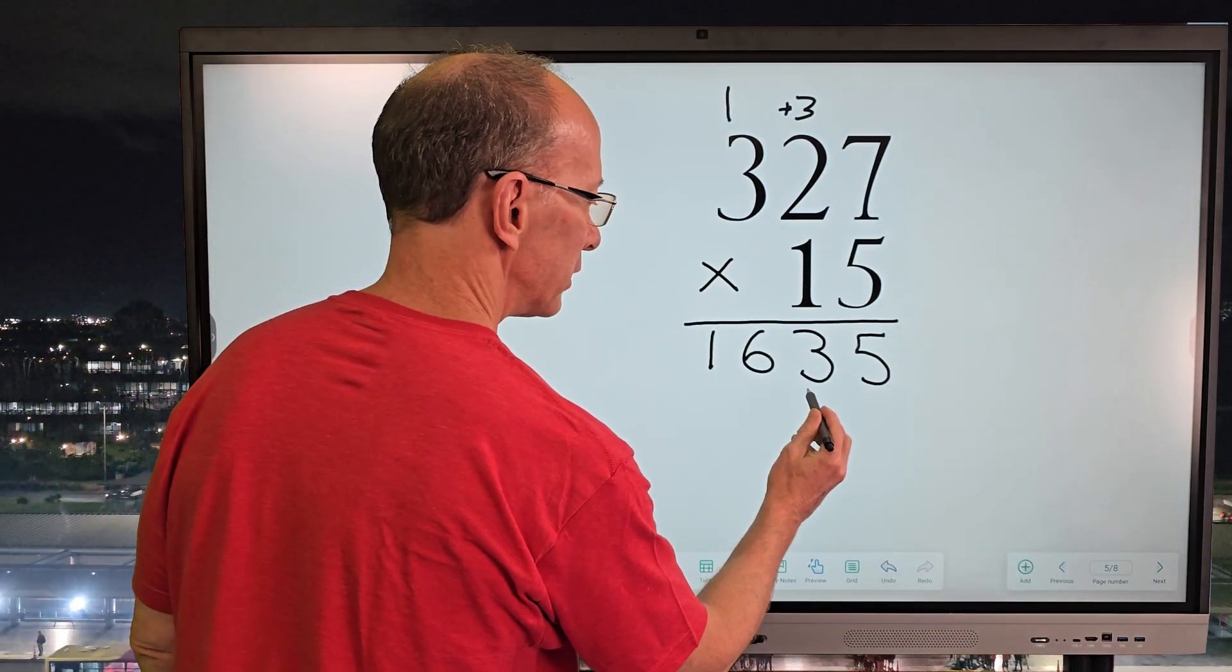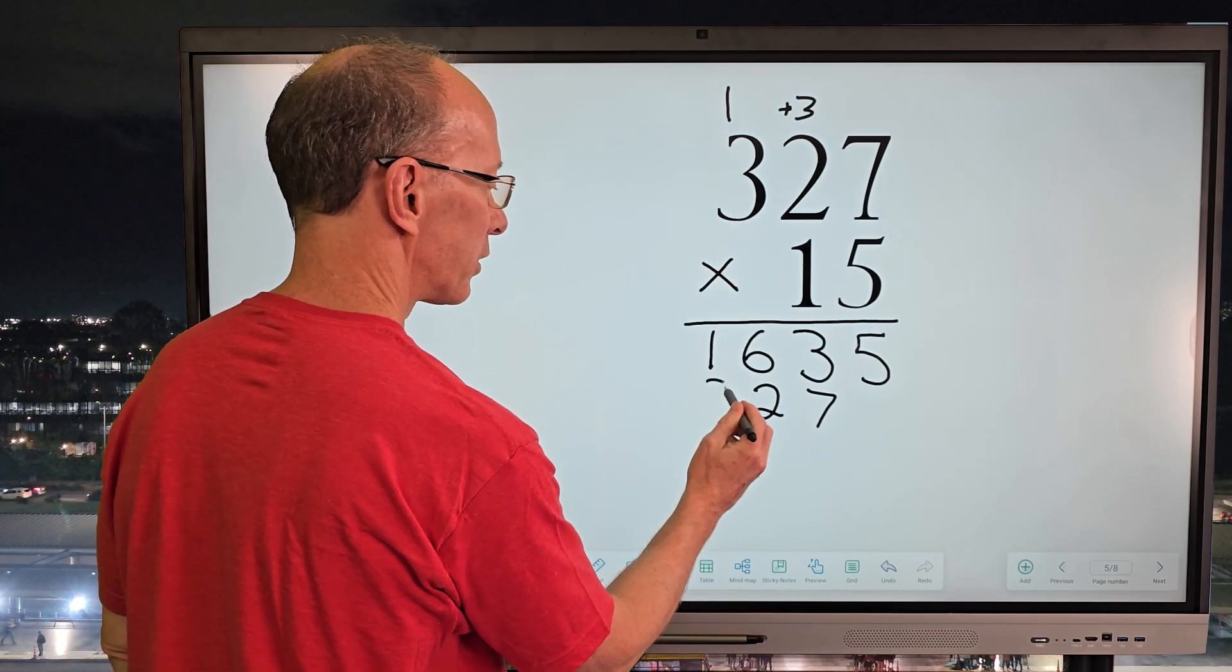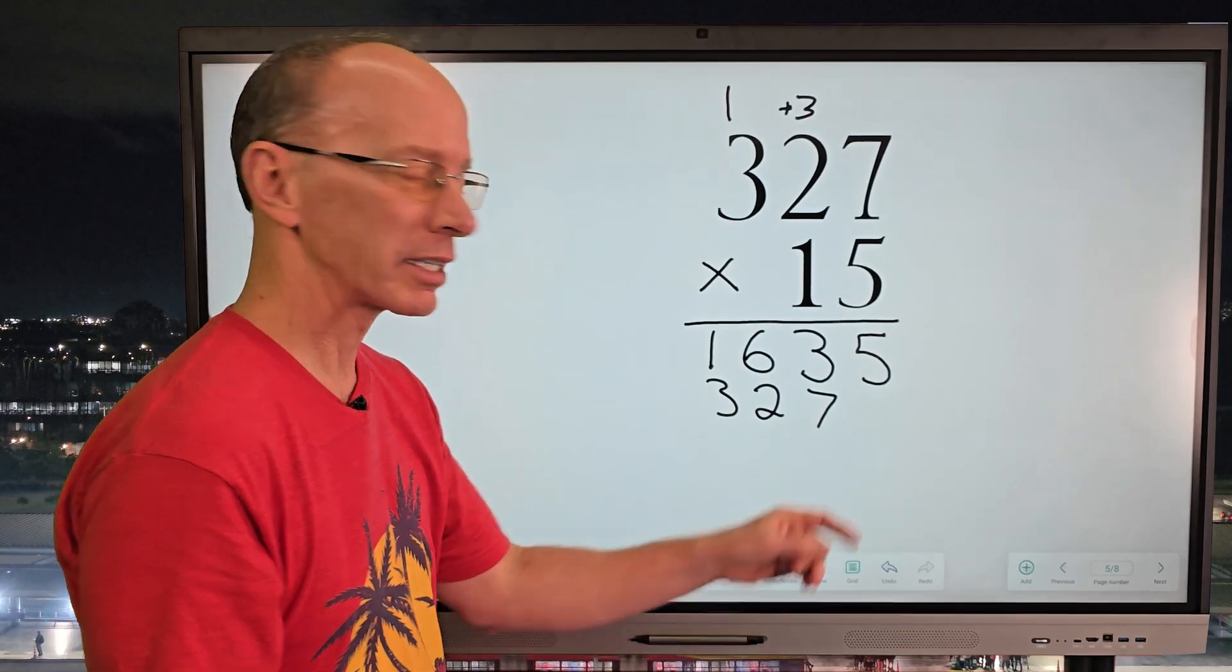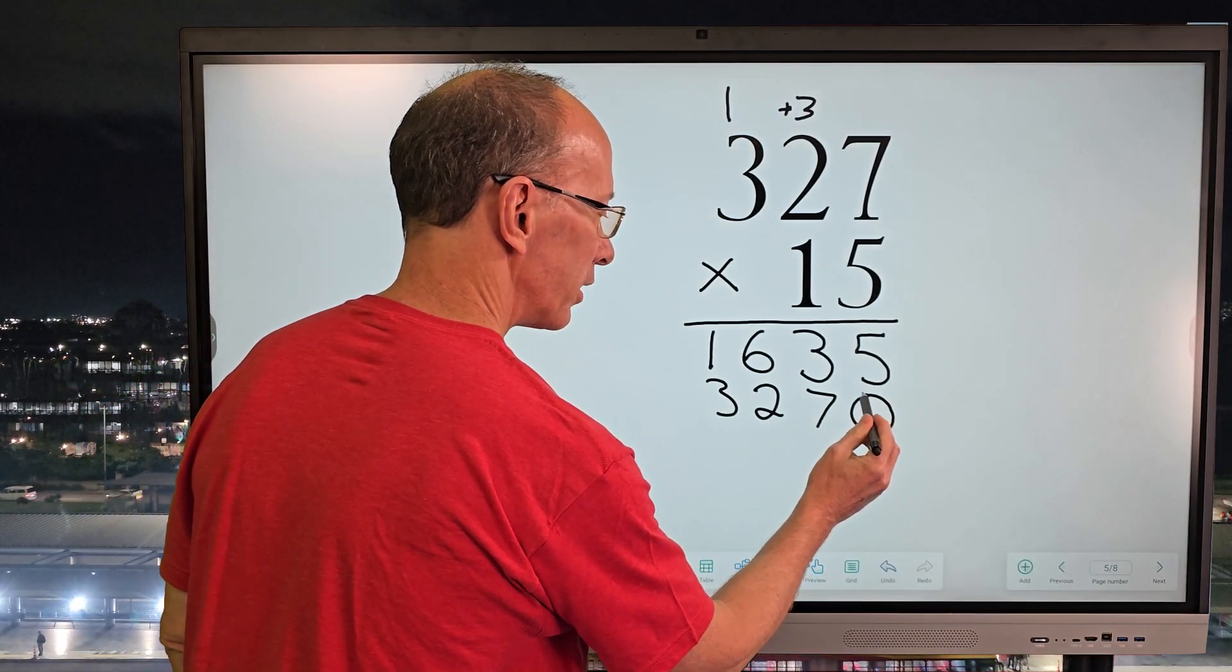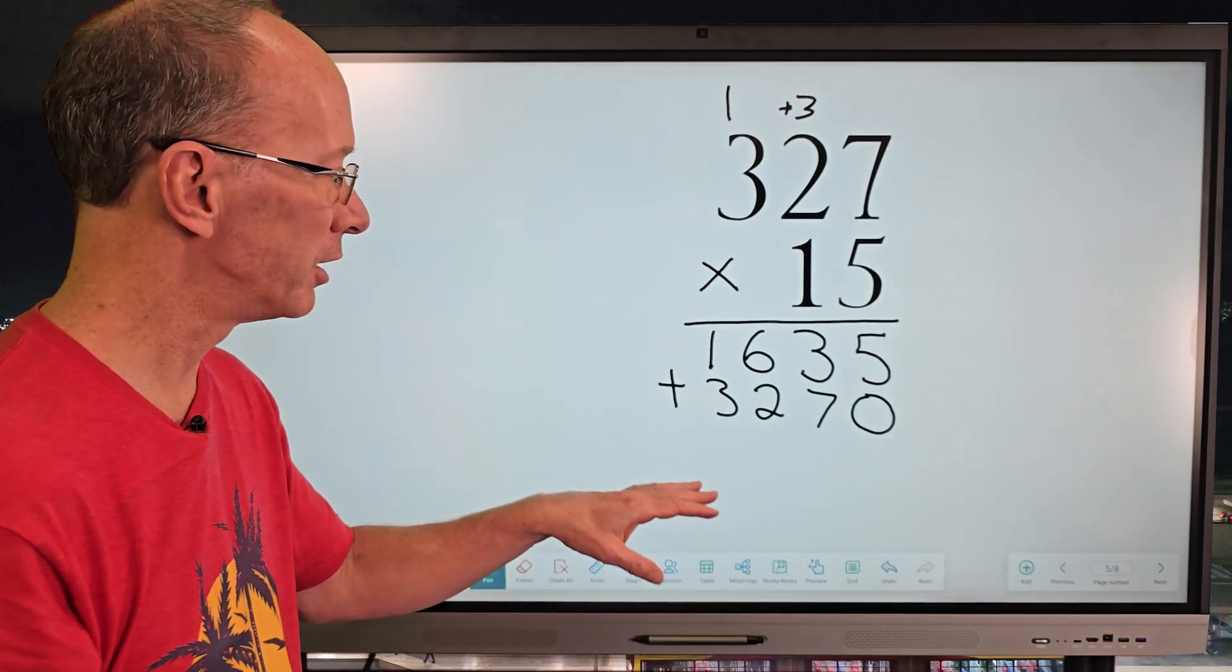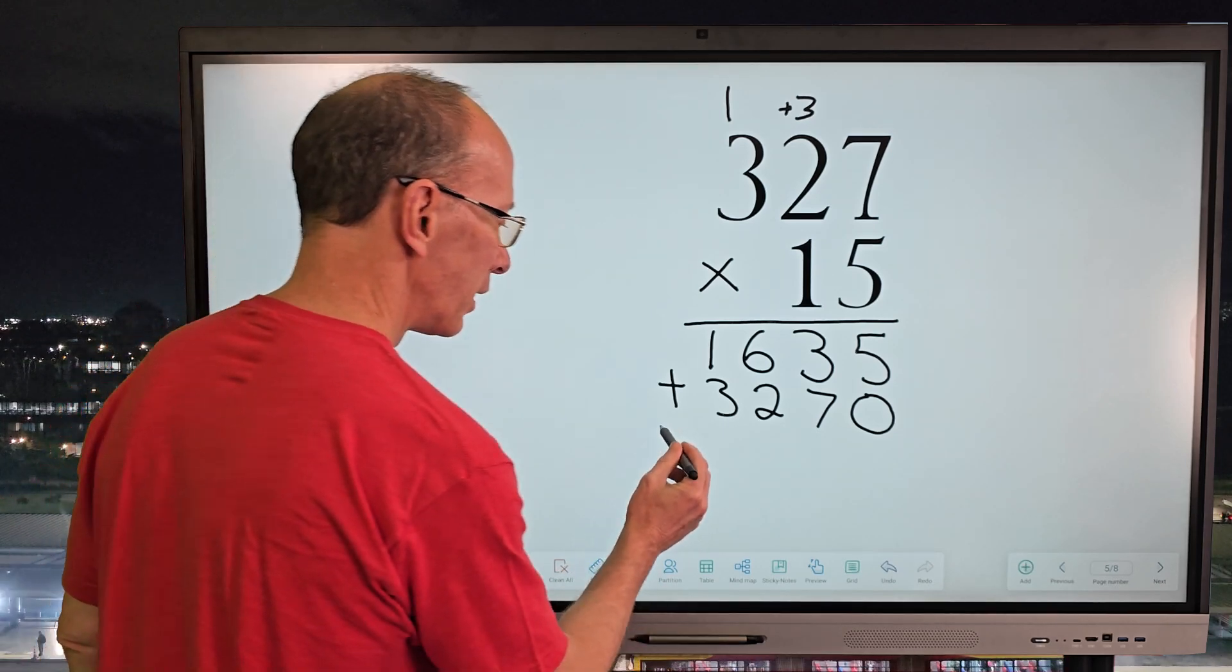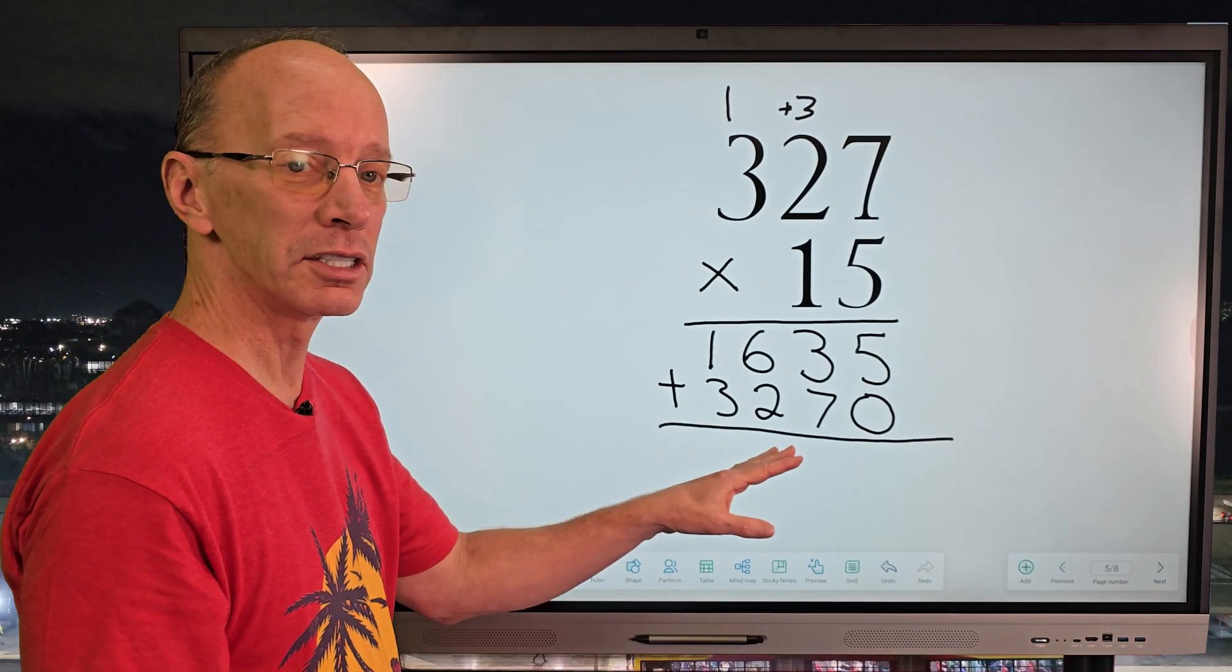1 times 7 is 7. 1 times 2 is 2. 1 times 3 is 3. And again, it's always kind of neat just to put a placeholder right here. It's not changing the value here at all. It just kind of helps you when you're starting to add, if you're adding a bunch of numbers there. So I'm going to go ahead and put a line right over here and then go ahead and just do our addition.